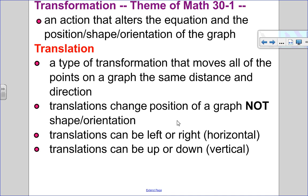Today we're going to look at a specific type of transformation called a translation. A translation is a transformation that moves all the points on a graph the same distance and the same direction. It's like picking the graph up and moving it maybe three units to the right or two units down. Translations change the position of a graph, but not the shape or the orientation.